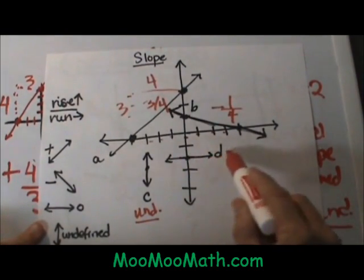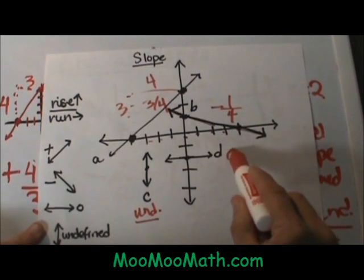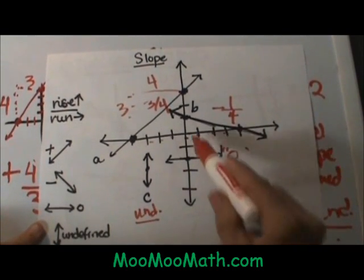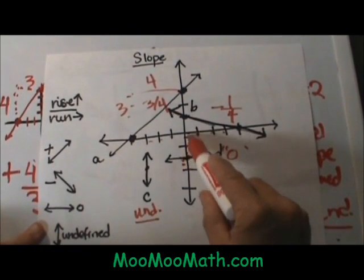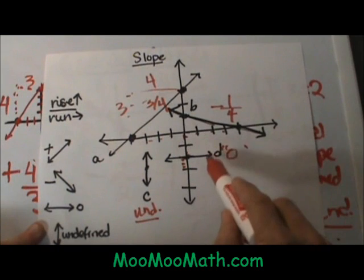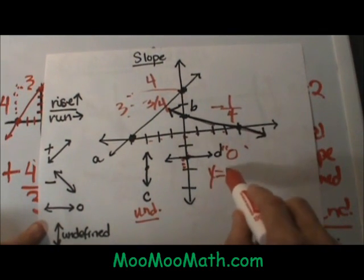Then the slope of our horizontal line is 0. The equation for this line is crossing at the y axis at negative 2. So it is y equals negative 2.